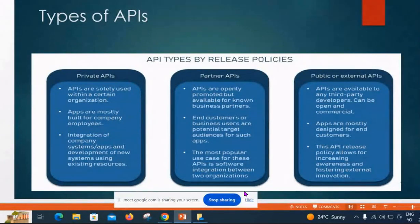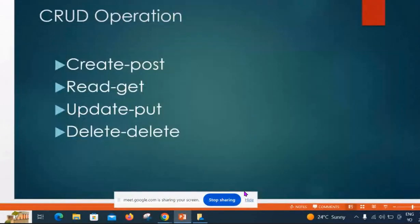In Postman, API testing uses CRUD operations. CRUD stands for Create, Read, Update, and Delete. Create corresponds to POST, Read corresponds to GET, Update corresponds to PUT, and Delete corresponds to DELETE.